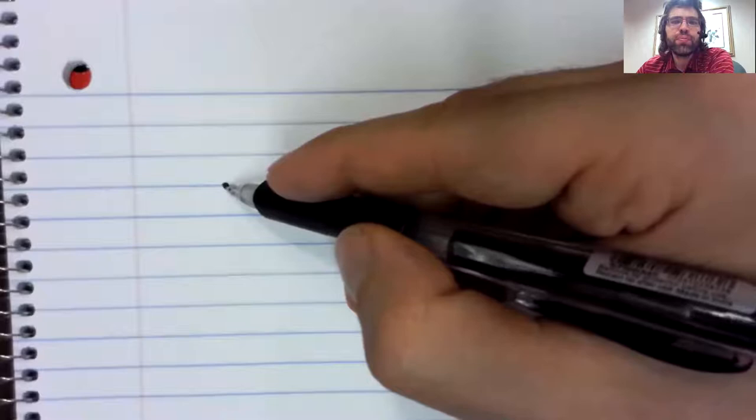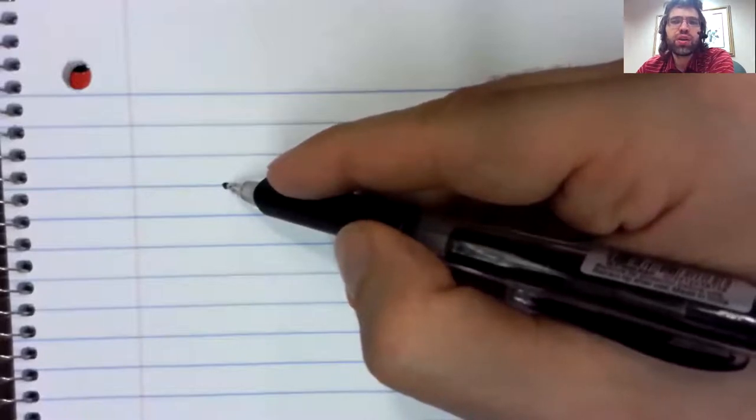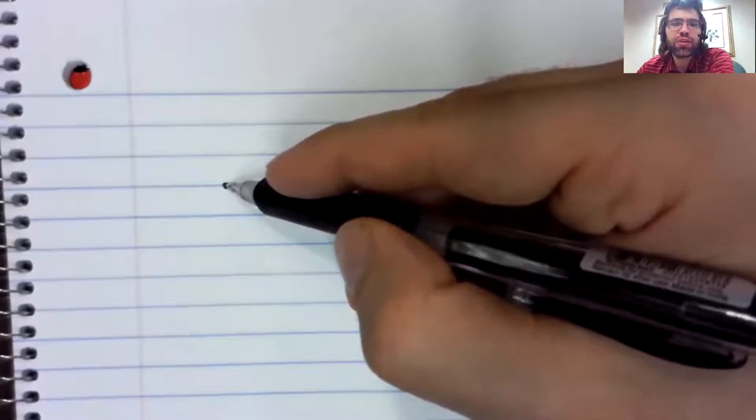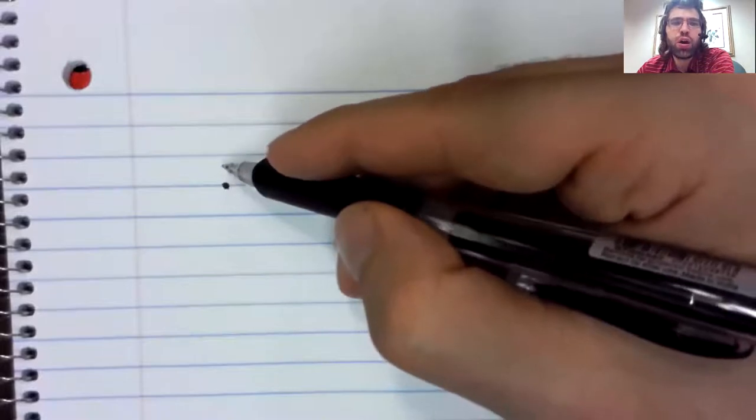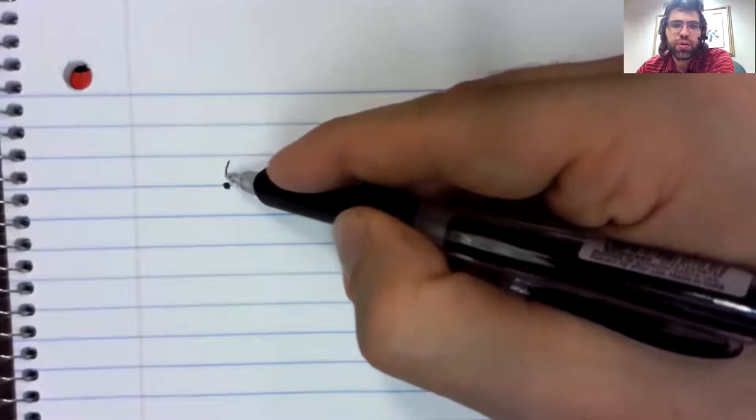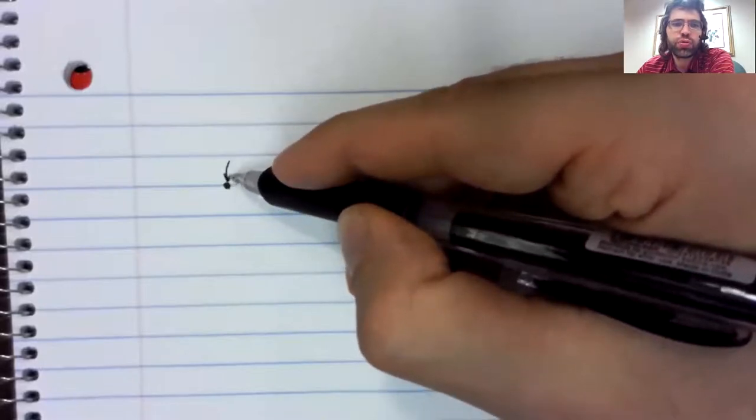Therefore, for a fixed point to have meaning, we need some kind of stability condition that ensures that when random factors move us off the fixed point, we return to it.